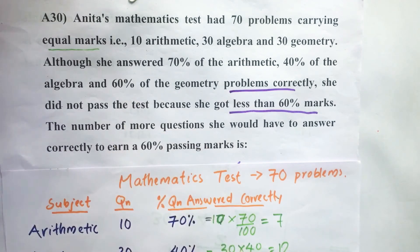Anita's mathematics test had 70 problems carrying equal marks: 10 arithmetic, 30 algebra, and 30 geometry. Although she answered 70% of the arithmetic, 40% of the algebra, and 60% of the geometry problems correctly,